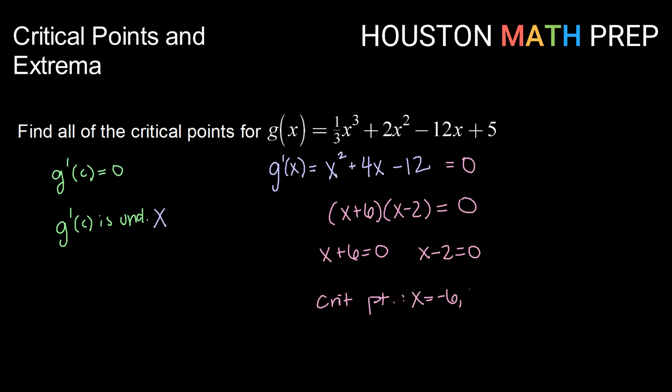x equals negative 6 and x equals positive 2. So the critical points for g of x equals this cubic polynomial are negative 6 and 2.